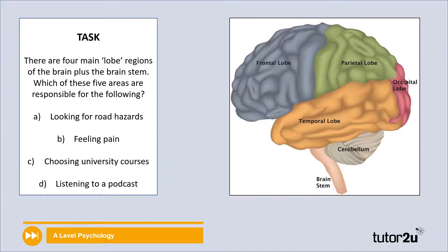Let's take a look at the four main lobe regions of the brain. On the diagram you can see the frontal lobe, the parietal lobe, the occipital lobe, and the temporal lobe. Right underneath we've got the cerebellum and the brain stem, but for now we're focusing on those four lobes. Think about which of these areas is responsible for the following: which one's responsible for spotting road hazards? Which one processes physical pain, such as stubbing your toe? Which one do you use when looking at university courses to join? And which one processes information when you listen to a podcast? Pause the video for a couple of minutes while you use your resources or hazard a good guess.